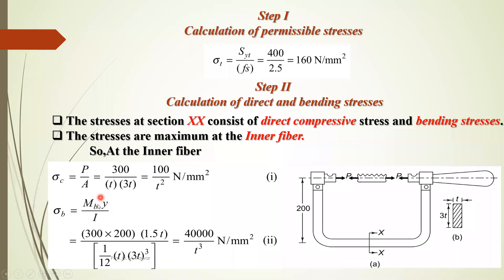Y is the farthest distance from the neutral axis, which is 3T divided by 2, so Y equals 1.5T. Area moment of inertia for a rectangular cross section is BD cubed divided by 12, where B equals T and D equals 3T. Substituting, I equals T multiplied by (3T) cubed divided by 12. Solving the bending stress equation gives sigma B equals 40,000 divided by T cubed Newton per mm square — call this equation 2.